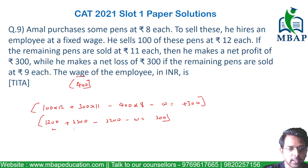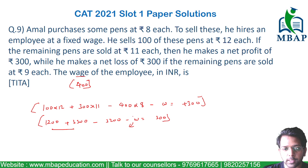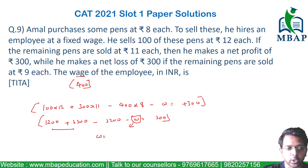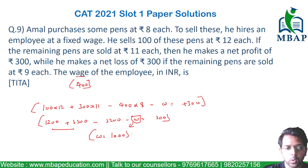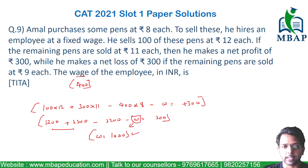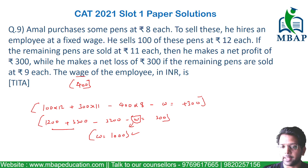Solving the equation, the wage or remuneration for this employee comes out to Rs.1000 as the final answer. An easy question which you have solved really well in the examination.